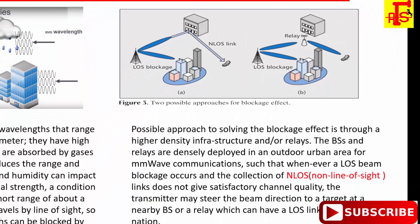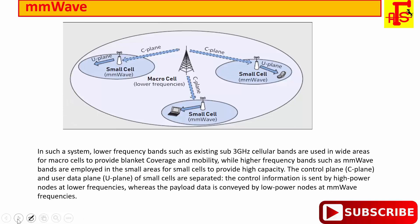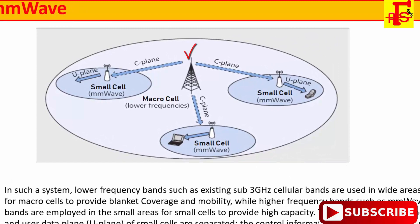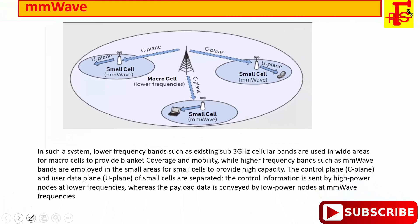In the overall frequency design, both lower and higher frequency bands are used. Lower frequency bands have higher range, so they are mostly used for macro cells. Higher frequency bands cover smaller areas, so they are used for small cells. For example, a 3 GHz cellular band is used in a wide area for macro cells to provide blanket coverage and mobility, while a higher frequency band like 60 GHz millimeter wave is used in a small area for small cells to provide higher capacity.